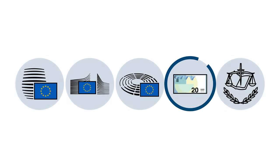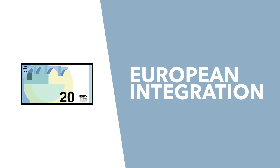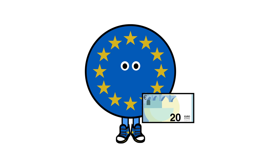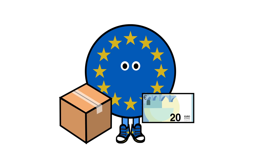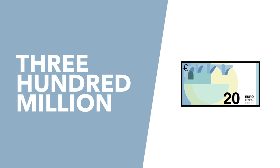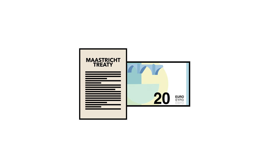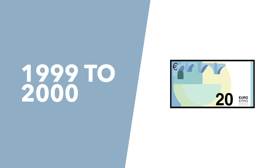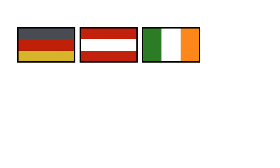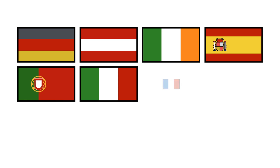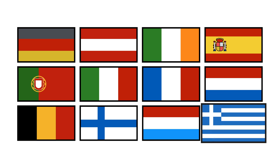The Euro is the most tangible example of European integration. If you live in the EU, you most likely are paid in Euros and buy things in Euros — it's used every day by over 300 million Europeans. Driven by a belief that the Euro would remove barriers to the single market, it was given the go-ahead by the 1992 Maastricht Treaty and launched in stages between 1999 and 2000. The founding Eurozone members were Germany, Austria, Ireland, Spain, Portugal, Italy, France, the Netherlands, Belgium, Finland, Luxembourg, and Greece.